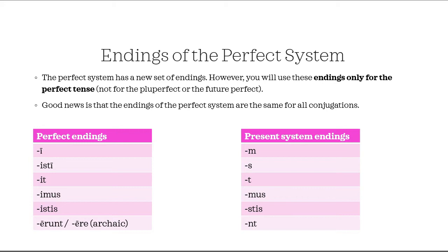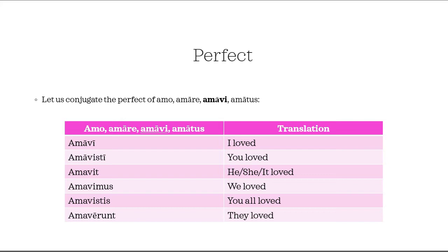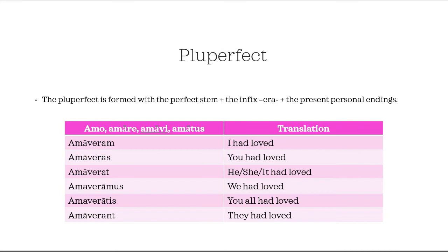Sometimes you can also find the archaic ending -ere, but you find it mainly in poetry, so be aware that it exists. Now let us conjugate the perfect of amo, amare, amavi, amatus. Our stem is going to be from the third principal part — amav. The forms are: amavi, amavisti, amavit, amavimus, amavistis, amaverunt. The translation is: I loved, you loved, he/she/it loved, we loved, you all loved, they loved — it's a normal simple past. As you can see, the stem never changes and I just need to change the personal endings: -i, -isti, -it, -imus, -istis, -erunt.